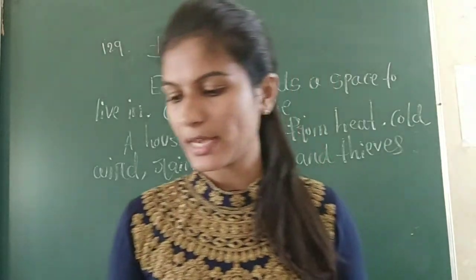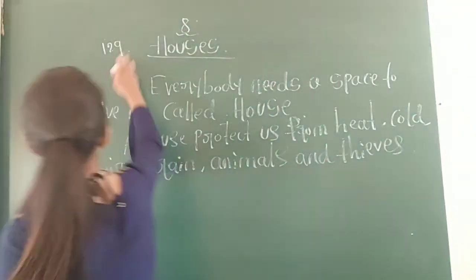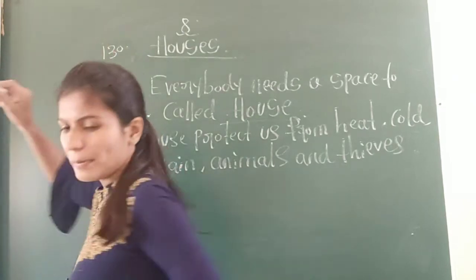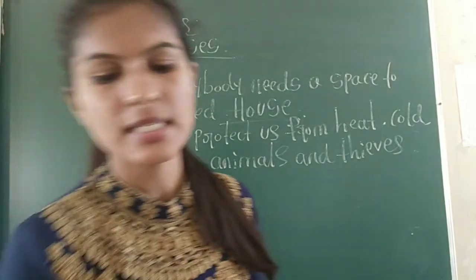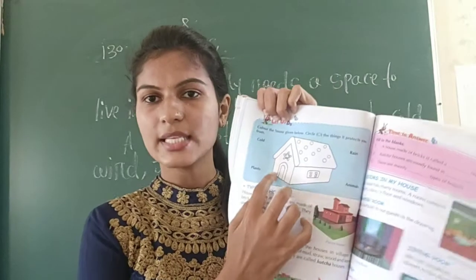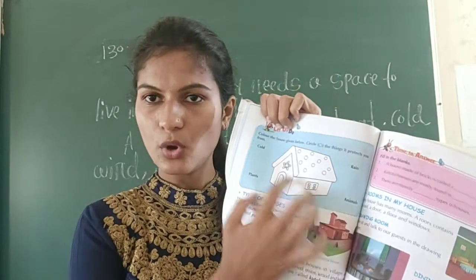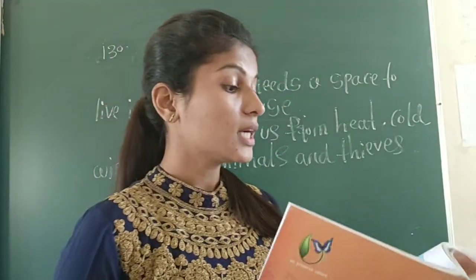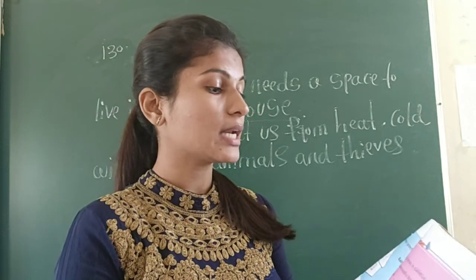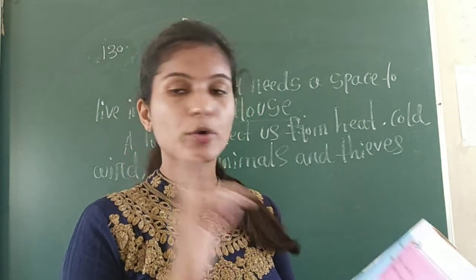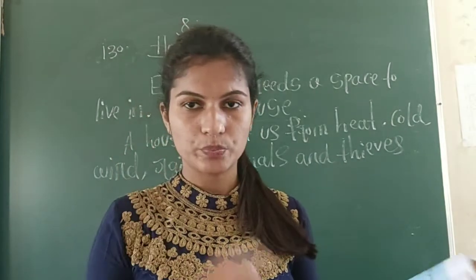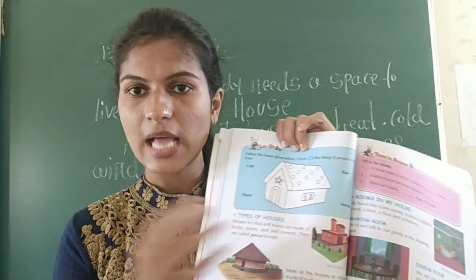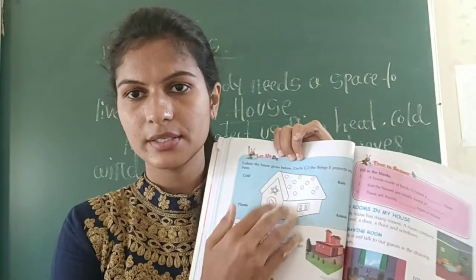Turn to page number 130. You can see a beautiful home. What you have to do here is color the house. Take some colors - different kinds of colors - and color it as you want.